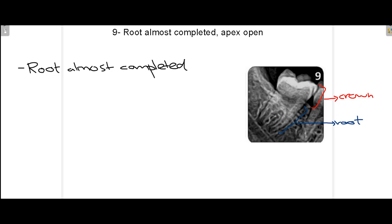At stage 9 you can see in this radiograph that the tooth has erupted in the oral cavity, the crown is visible, and the root is almost completed. At this end you can see the apex are open. Stage 9 marks where the root is almost complete but the apex are still open.